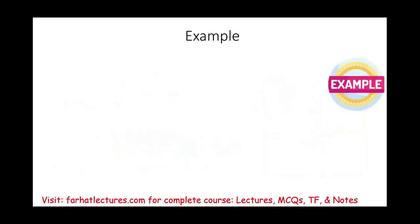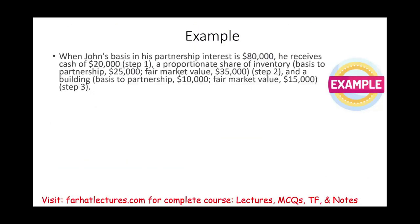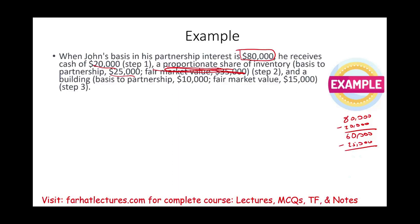The best way to illustrate this is to look at an example. Let's assume John has a basis of $80,000 and received $20,000 in cash. Starting with $80,000, the first step is to allocate the cash — cash has the same basis and fair market value — so basis after cash is $60,000. Then, a proportionate share of inventory with a basis of $25,000 and fair value of $35,000 — we allocate $25,000 for the inventory, leaving $35,000 remaining.